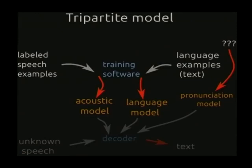The acoustic model is made from speech examples that have an exact transcription for each example, and there's a whole lot of text that makes a language model. But the pronunciation model just comes from somewhere - it's a model of English spelling, which you can't really get from anywhere except the people before you.